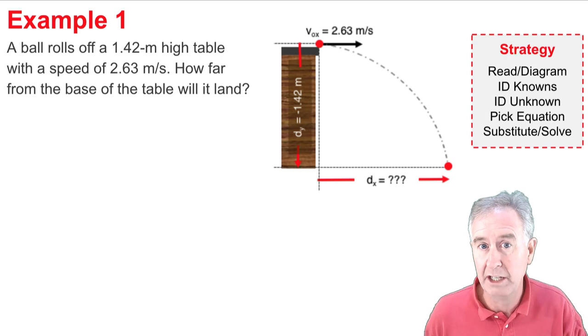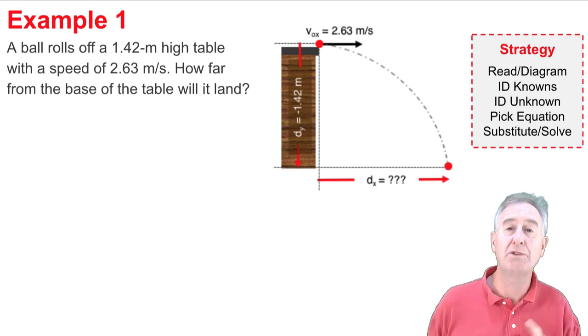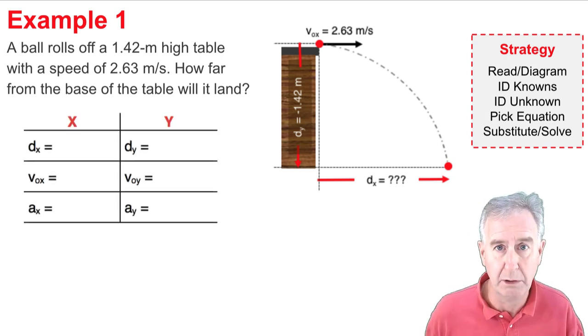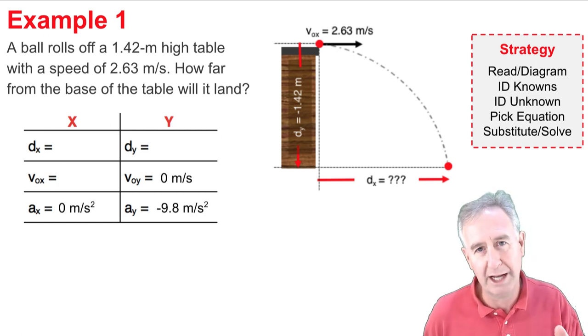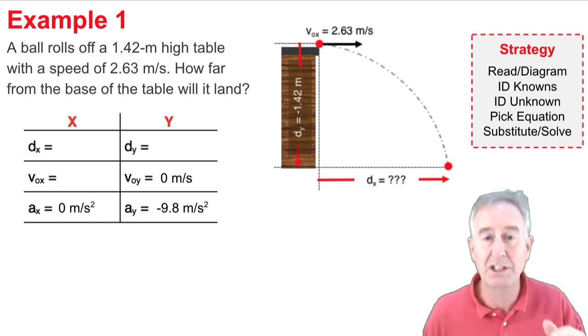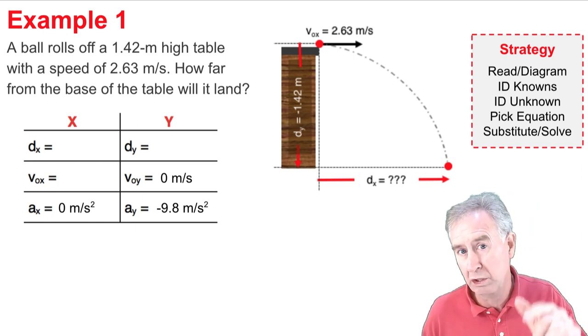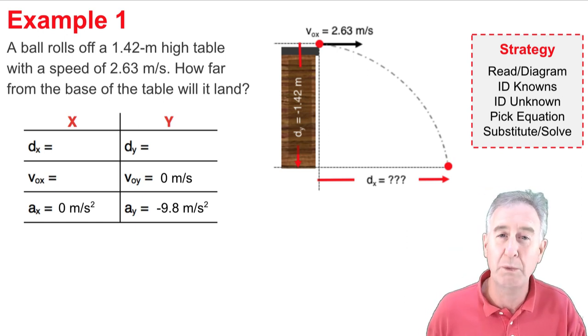My second step uses an xy table in order to ID the knowns and the unknowns. So here's my xy table, and I have to fill it out. Now, it's a projectile, so you know the bottom row. Ax is 0, ay is negative 9.8, and since it's horizontally launched, there's no original y velocity, so I know voy is 0.